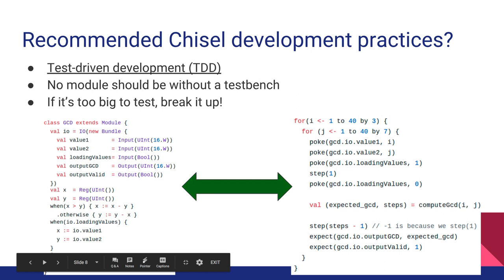We recommend a test-driven development model. When you're building something, you think about how it's supposed to work, and as you build it, you write a series of tests. In the hardcore version, you write the test first — it will fail because nothing implements it yet, and then you build your code to meet the test. There's an example on screen of how the Chisel testers work, using the peek-poke model described yesterday.